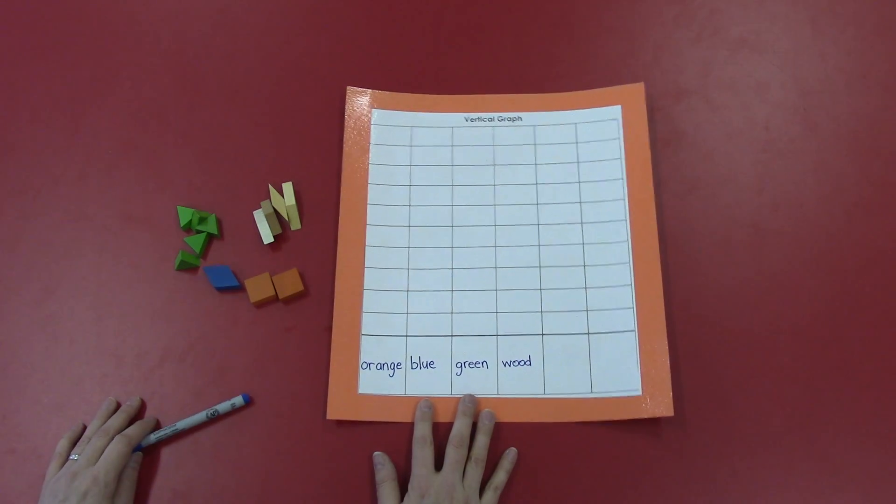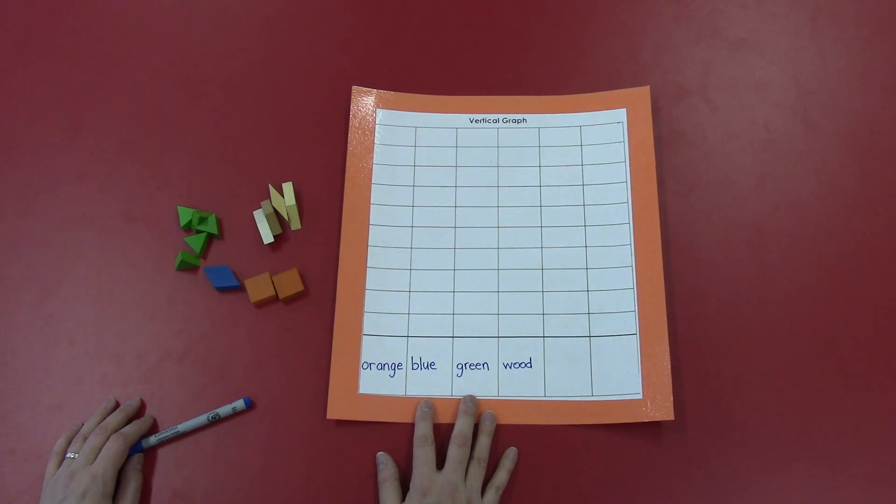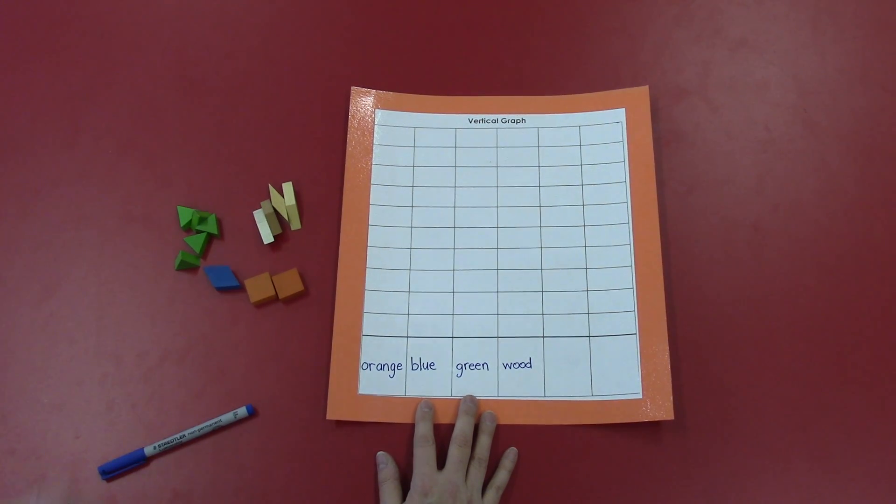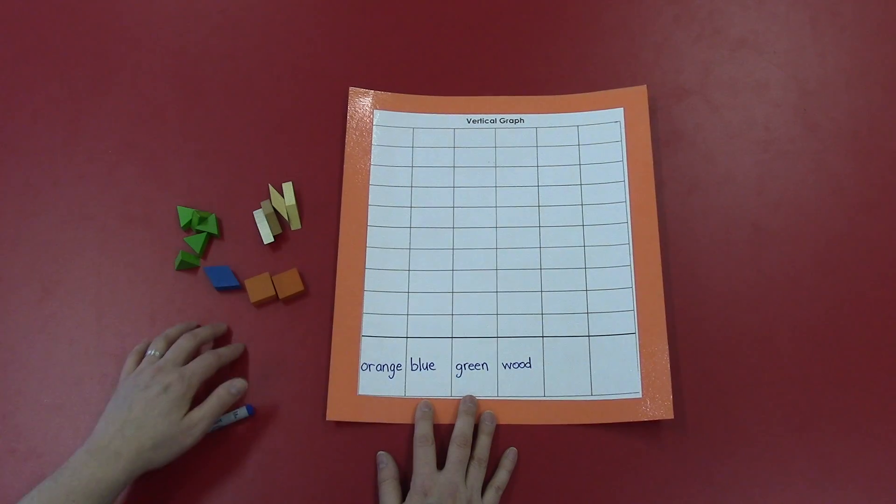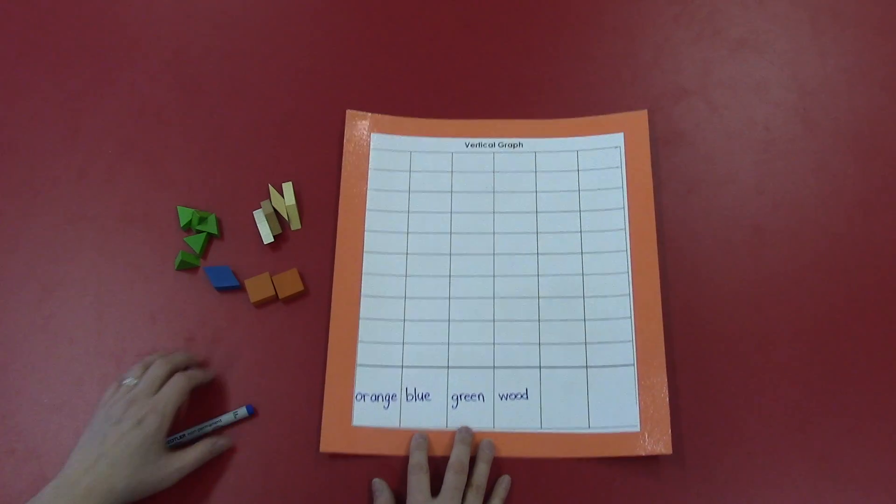Once I have that done, I need to think about a title that this graph could have. It should be connected to the objects I'm sorting and how I'm sorting them, how I'm going to organize them on my graph. So I'm going to call these color objects.